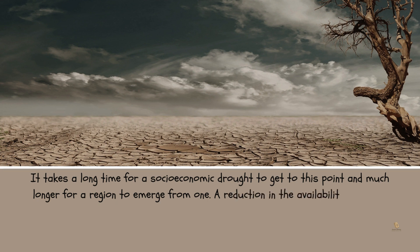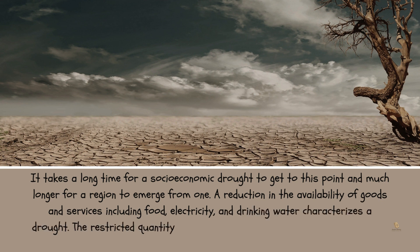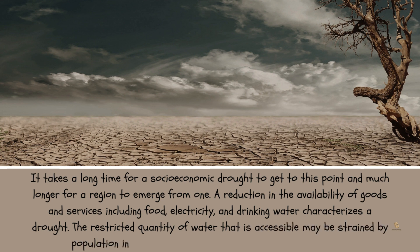A socio-economic drought takes a long time to develop, and much longer for a region to emerge from one. It is characterized by a reduction in the availability of goods and services including food, electricity, and drinking water. The restricted quantity of accessible water may be strained by population increase or an excessive demand for such supplies.